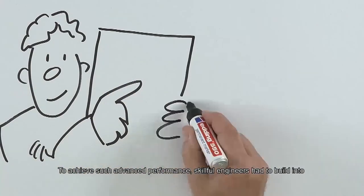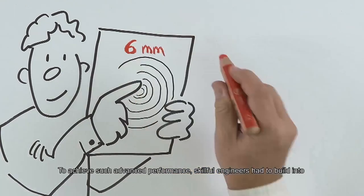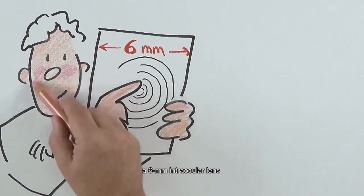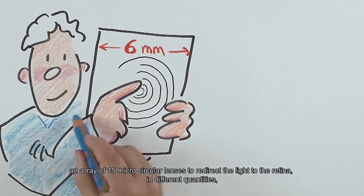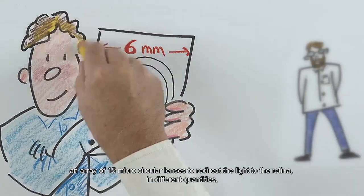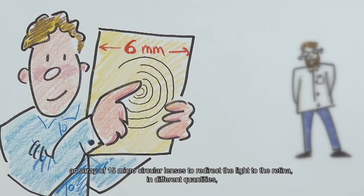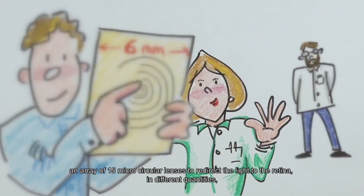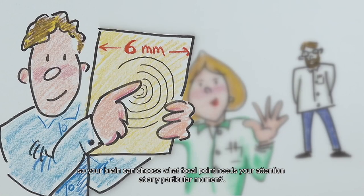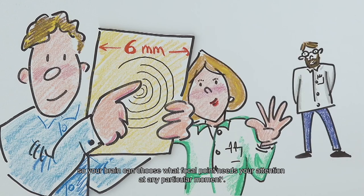To achieve such advanced performance, skillful engineers had to build into a 6mm intraocular lens an array of 15 microcircular lenses to redirect the light to the retina in different quantities, so your brain can choose what focal point needs your attention at any particular moment.